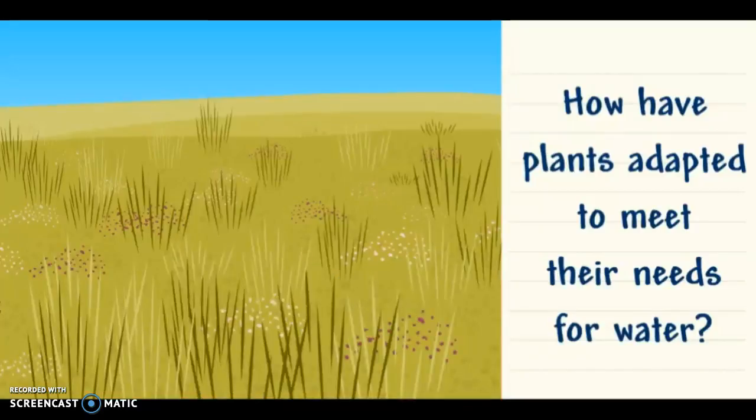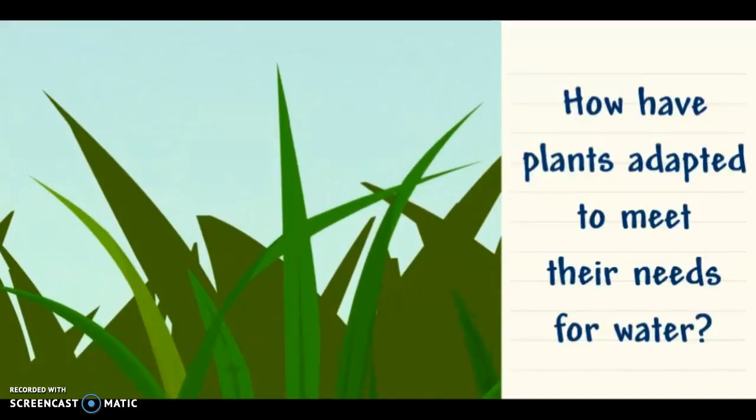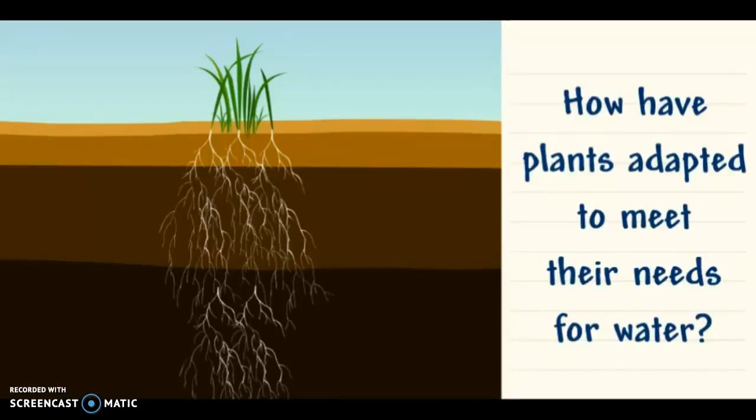Grasslands sometimes get rain, but they can also be hot and dry for long periods of time. Thin leaves allow less water to escape during dry spells. The roots of many grasses grow deep to reach water down below.